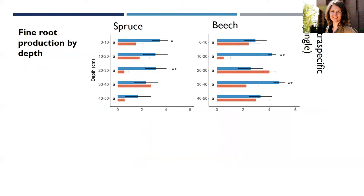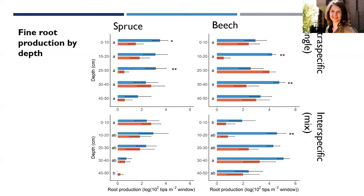Looking at fine root production by depth, we see that production is reduced in both the upper and deeper layers of the soil. Even though soil moisture was higher in deeper layers, we still see this reduction, which suggests the trees may have been carbon-limited — they simply couldn't produce as many roots under these conditions. In the mixed species zone, however, we do not see this drought effect on fine root production of spruce in any of the layers, while beech still shows a decrease from 10 to 20 centimeters soil depth.